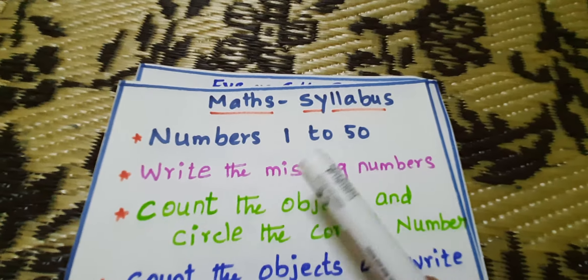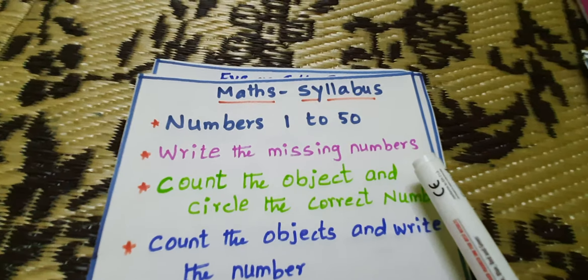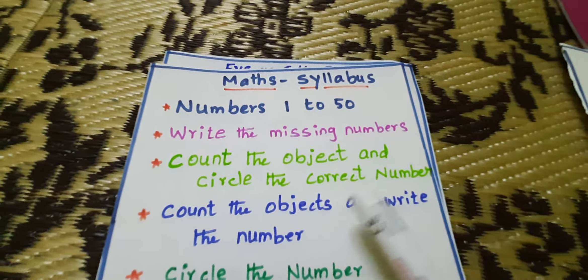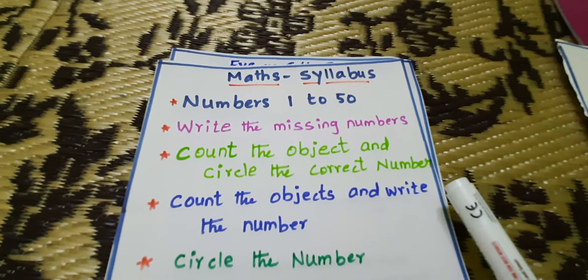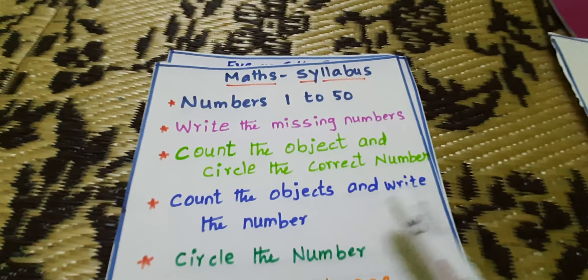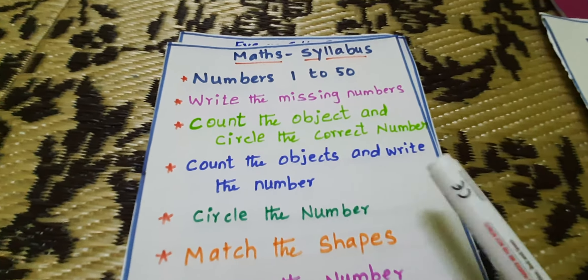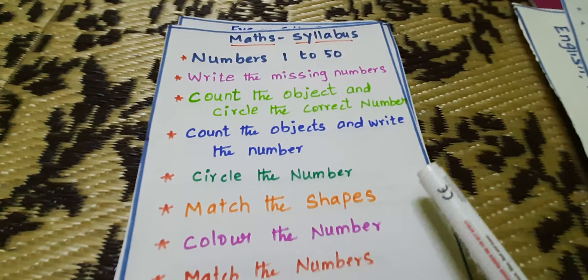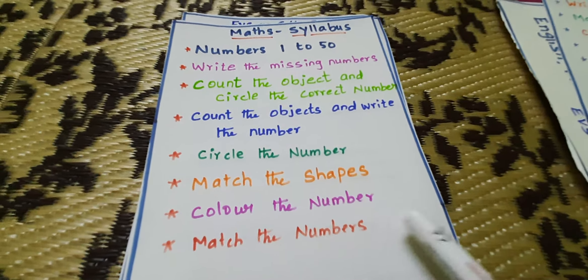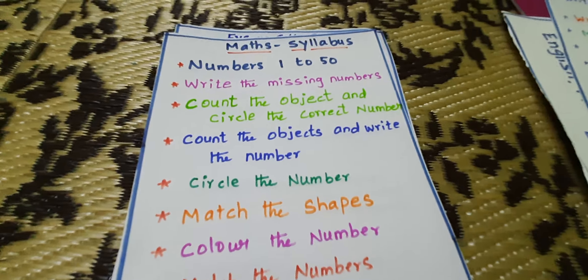Numbers 1 to 50. Write the missing numbers. Count the object and circle the correct number. Count the object and write the number. Circle the number. Match the shapes. Color the number. Match the numbers.